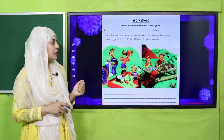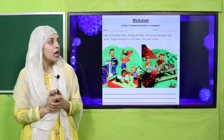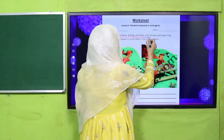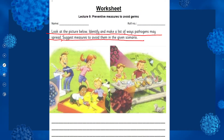Now is the time for the practice worksheet. You can download this worksheet from the description box below this video, or get it in print form from your teacher. The topic is: preventive measures to avoid germs. Look at the two pictures, identify and make a list of ways pathogens may spread, and suggest measures to avoid them in the given scenario. Pause the video and complete the worksheet.